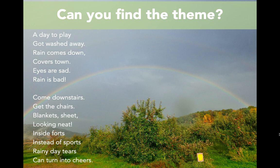We're going to try another type of text, and I want to see if you can find the theme. This is a poem: 'A day to play got washed away. Rain comes down, covers town. Eyes are sad, rain is bad. Come downstairs, get the chairs. Blankets, sheet, looking neat. Inside forts instead of sports. Rainy day tears can turn into cheers.' What do you think this poem is trying to tell us? What can we learn or take away from this poem?